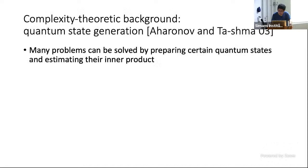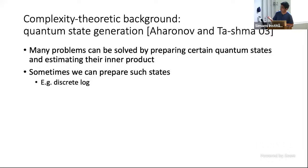Before concluding, I'd like to mention the complexity-theoretic background behind this work, known as Quantum State Generation — a very beautiful paper by Aaronson and Tashma. The intuition is that many problems can be solved by preparing certain quantum states and estimating their inner product, which is a general way of designing quantum algorithms. For example, discrete log is such an example: if we prepare certain quantum states and estimate their inner product, this can be used to solve discrete log. We know how to prepare such states and how to solve discrete log — both are in BQP. Our construction of the quantum kernel essentially follows from this example.